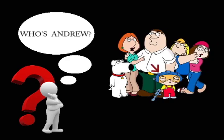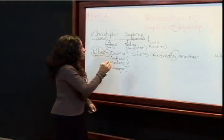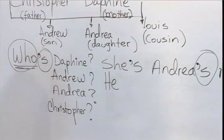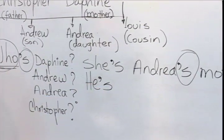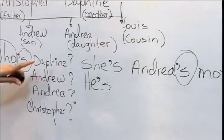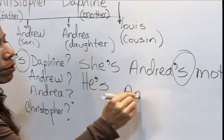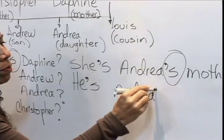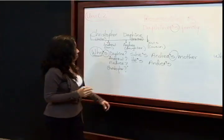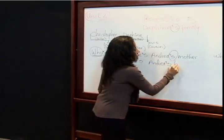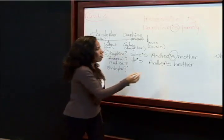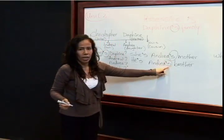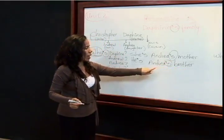Who's Andrew? ¿Quién es Andrew? Como es un chico, decimos 'he'. Él es — usamos la contracción. He's Andrea's brother. El hermano de Andrea. Estamos indicando 'de': hermano de Andrea.